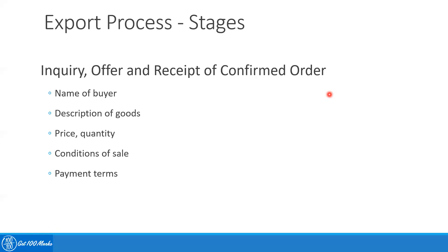Fifth are the payment terms — is it advanced payment, post-payment, is there a credit period, or some other payment arrangement. Sixth is the export license — for certain commodities or products, you need a very specific export license, so you need to obtain that if required.